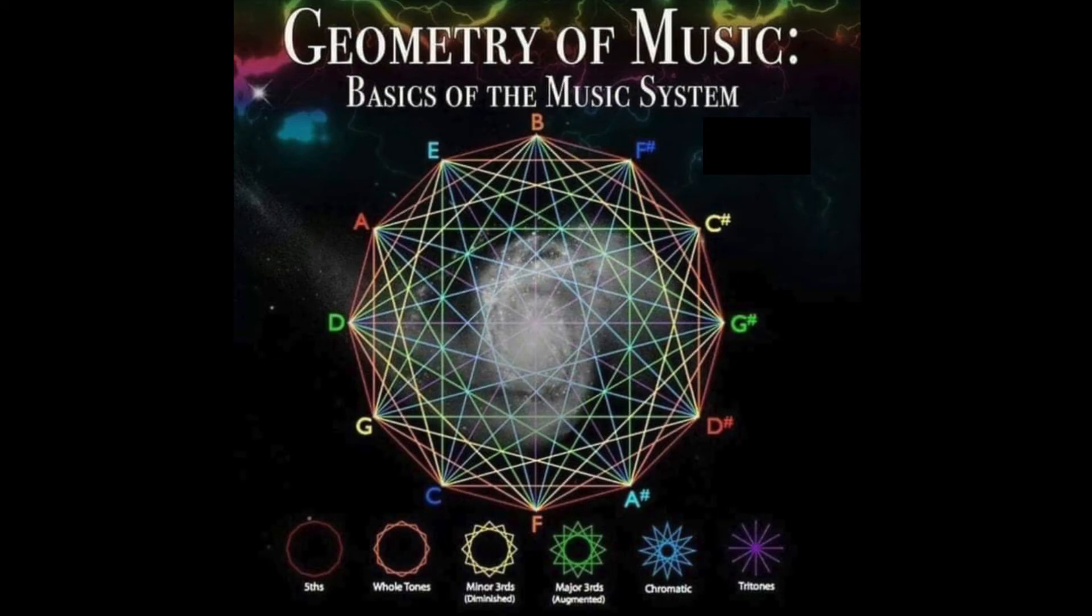But these graphics are lying to us. The geometry we can create within a circle is very beautiful, but our 12-note chromatic scale does not create this geometry. And here's why.